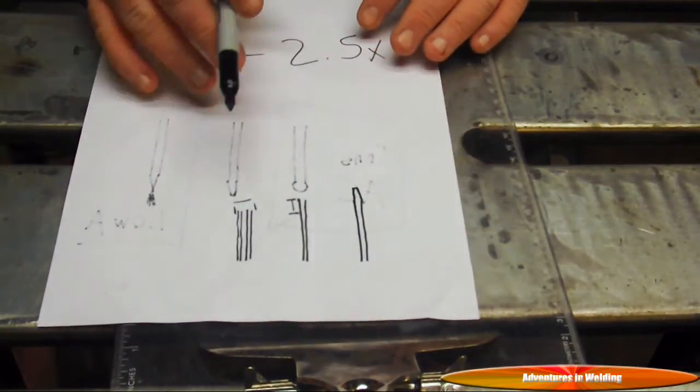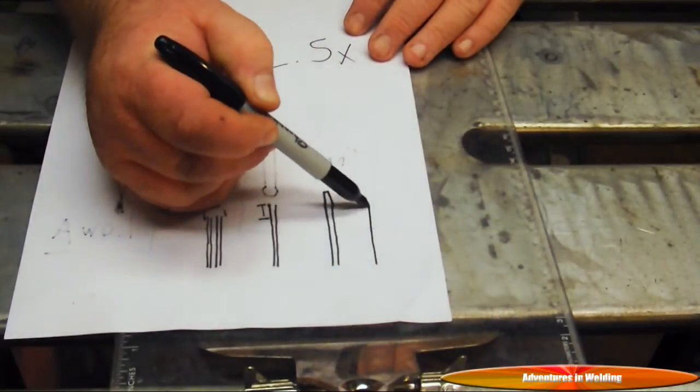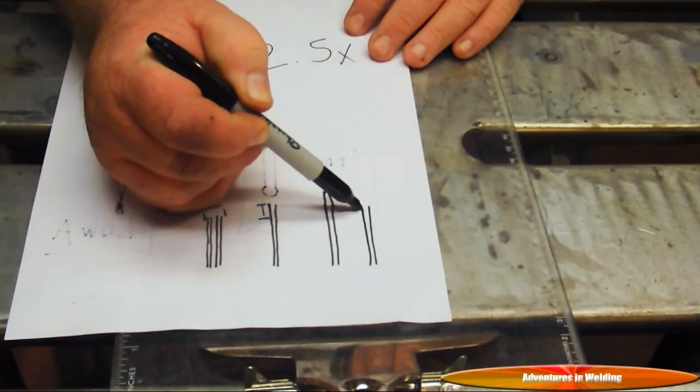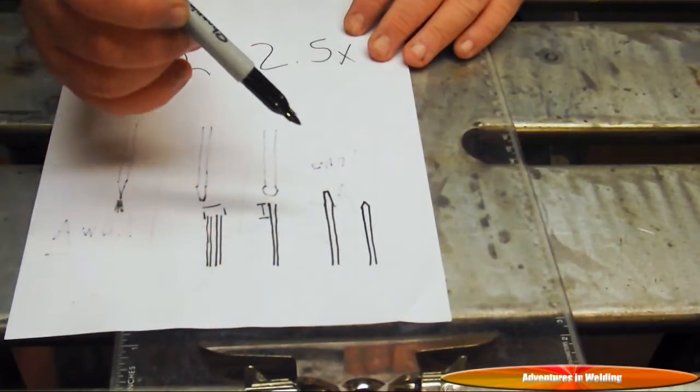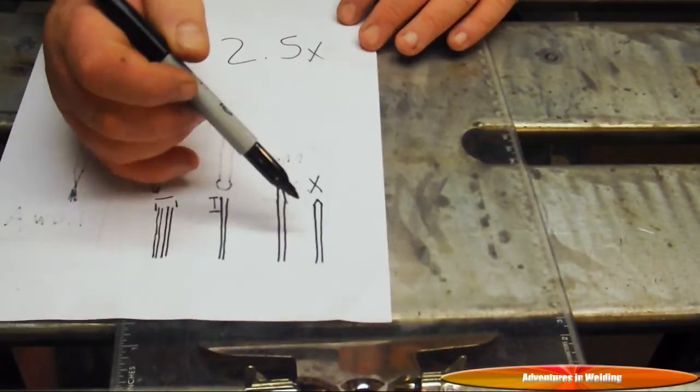So once again, we have our electrode, and you're going to want your point to be about that long. So when you grind it, you want a point like that. You don't want to end up with that or with that.